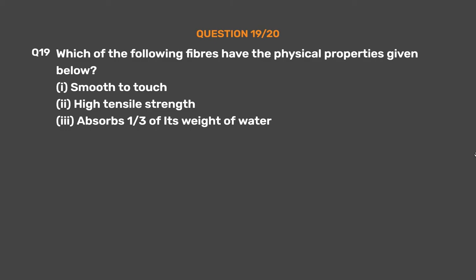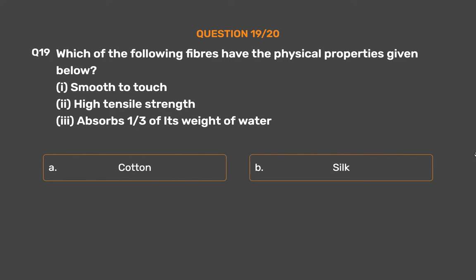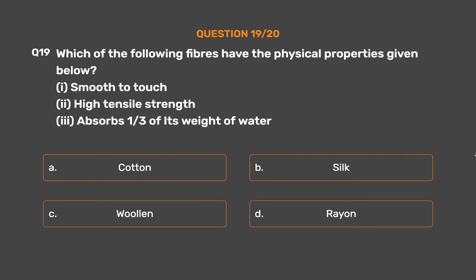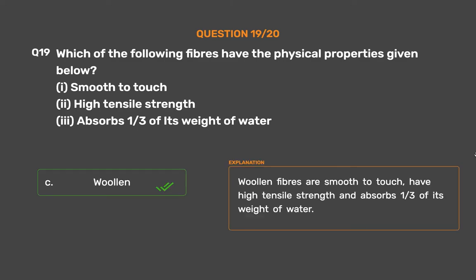Question No. 19. Which of the following fibers has the physical properties: (1) Smooth to touch, (2) High tensile strength, (3) Absorbs one third of its weight of water? Option A: Cotton, Option B: Silk, Option C: Woolen, Option D: Rayon. The correct answer is Option C: Woolen. Woolen fibers are smooth to touch, have high tensile strength, and absorb one third of their weight in water.